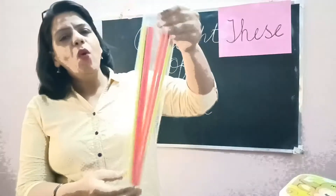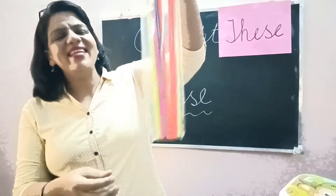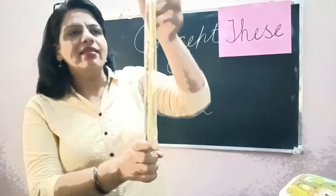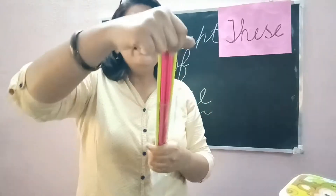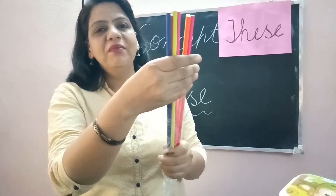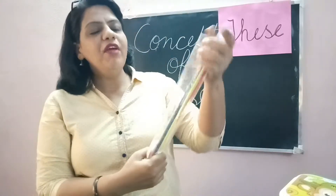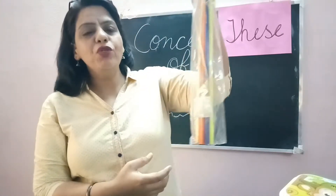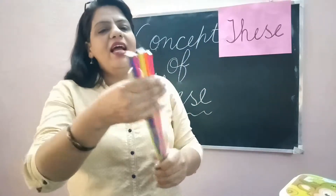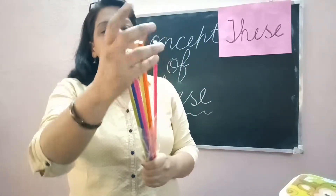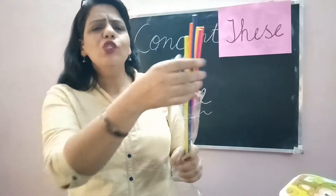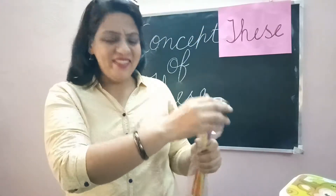Now see, what is this? This is a packet. And these are pencils. When it is bound together — one packet — so we are using 'this' for it. And if I am taking it out, then so many pencils are coming out, so 'these are pencils'.